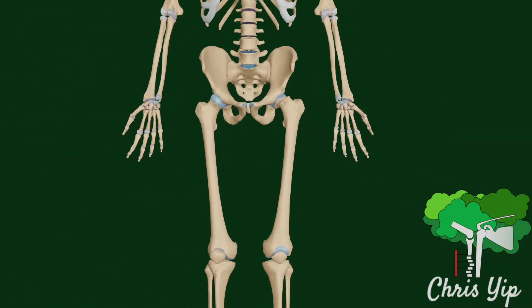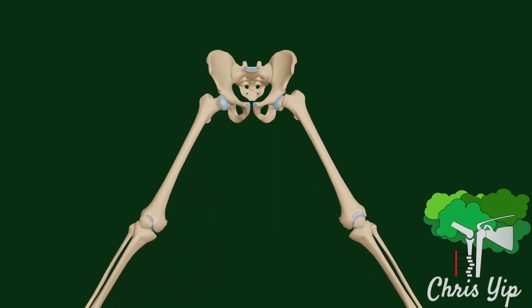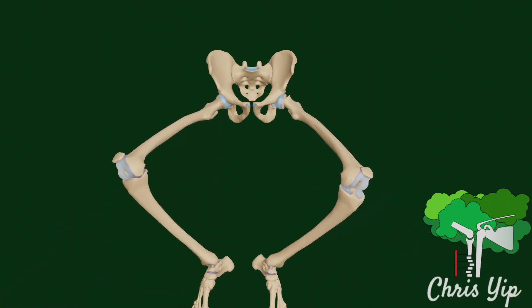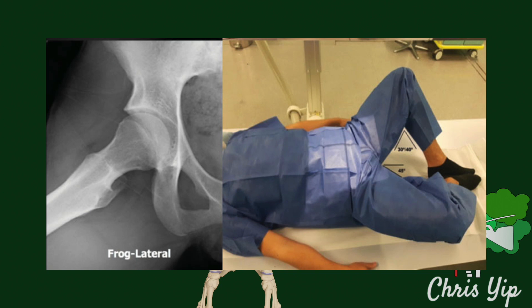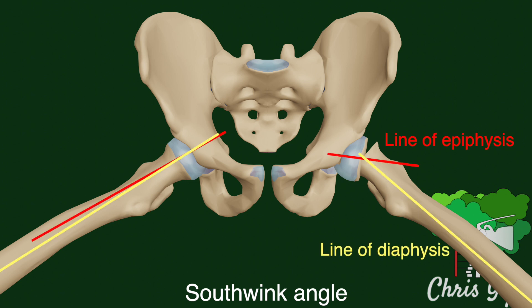The signs mentioned can be made more obvious by taking an AP x-ray of the patient in the frog-leg position. In this position, the thigh is first abducted, the knee is flexed, and then externally rotated to produce the position of a frog. The Southwick angle can be measured in this view to assess the severity of the slip relative to the unaffected contralateral side. Two lines are drawn along the epiphysis and the diaphysis, and the difference in the angle between the two sides is suggestive of the severity of the slip.